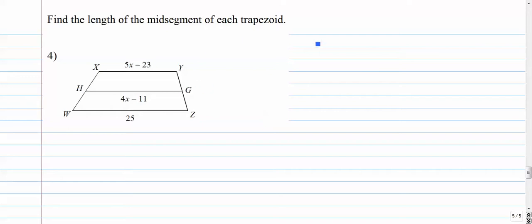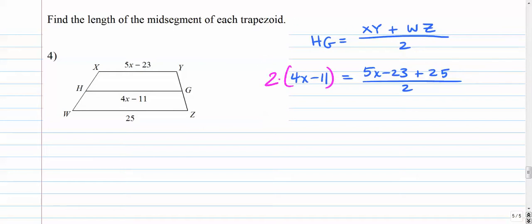Again, mid-segment is equal to base plus base over 2. Plug in everything you know. 4X minus 11. 5X minus 23. 25. What I'm going to do first, as I've done in the past couple problems, is clear the denominator, multiply it by 2. On the left-hand side, I need to distribute that 8X minus 22. I'm going to simplify this numerator. I get 5X.